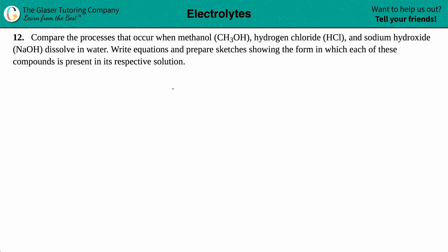Number 12. Compare the processes that occur when methanol, which is CH3OH, hydrogen chloride, which is HCl, and sodium hydroxide, which is NaOH, dissolve in water. We want to write equations and prepare sketches showing the form in which each of these compounds is present in its respective solution.